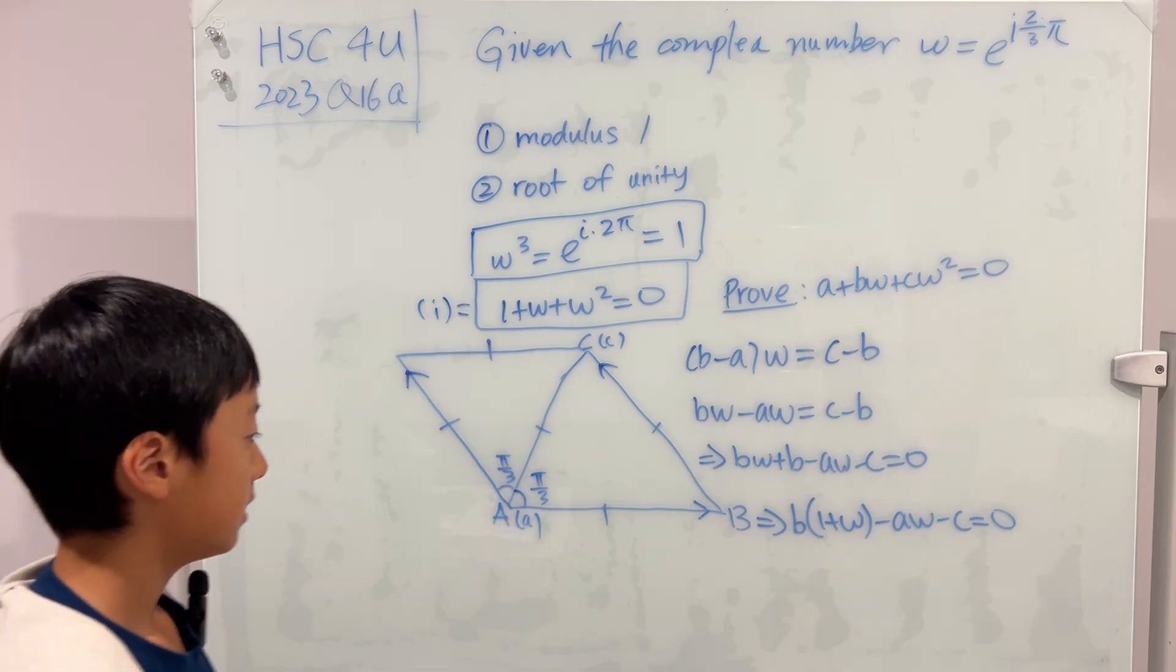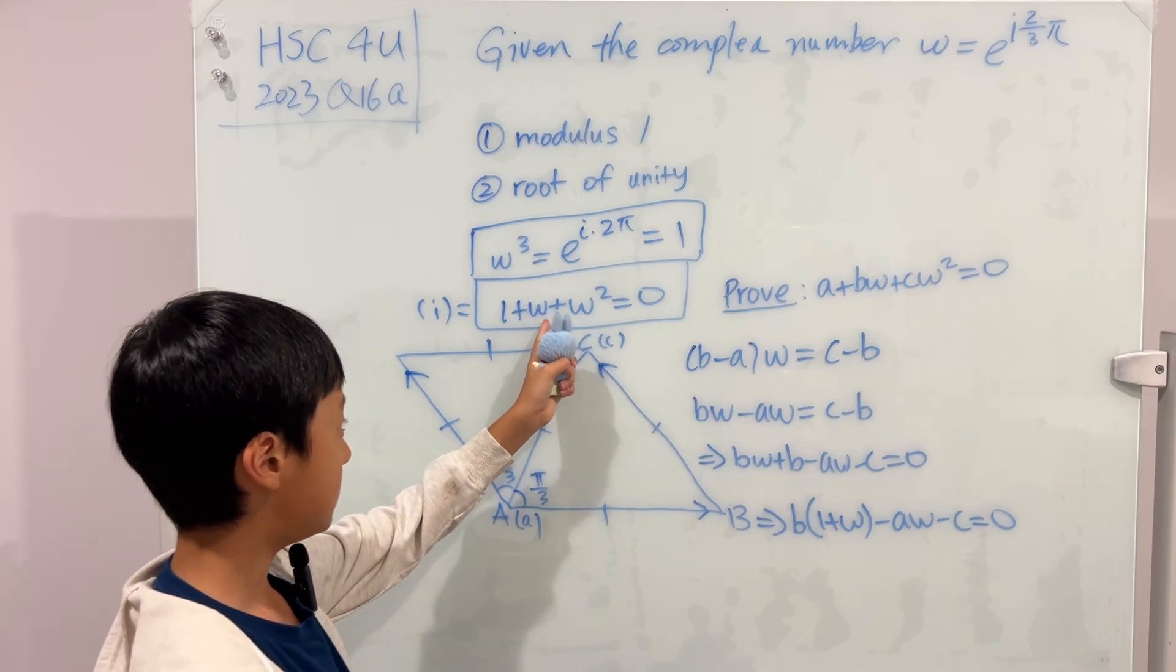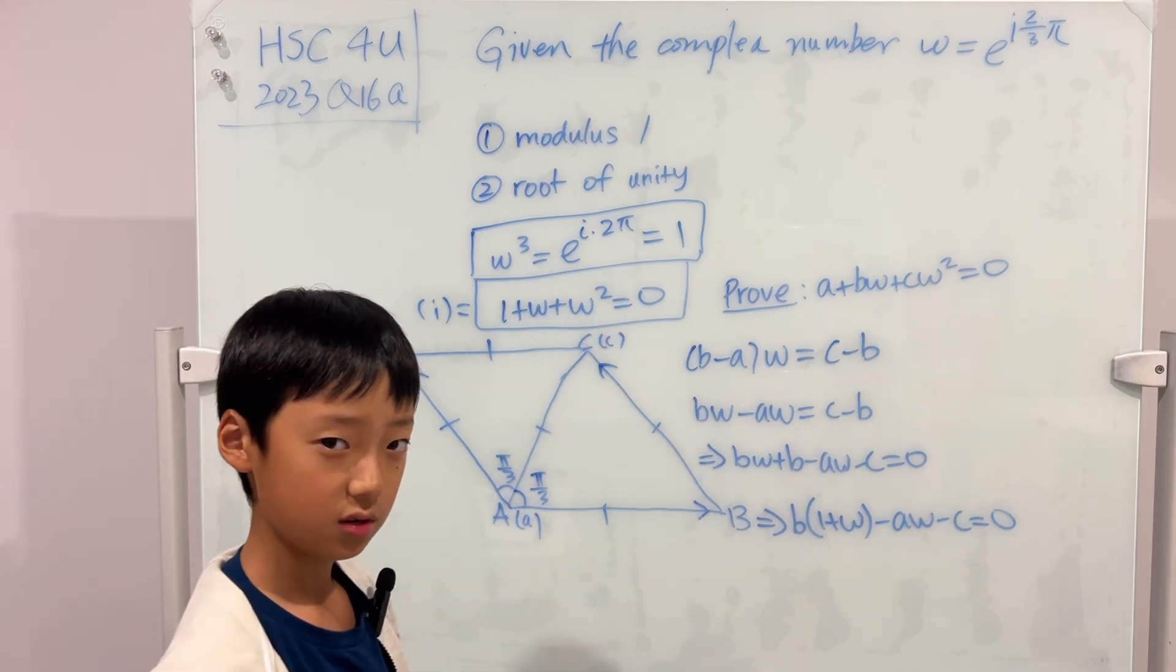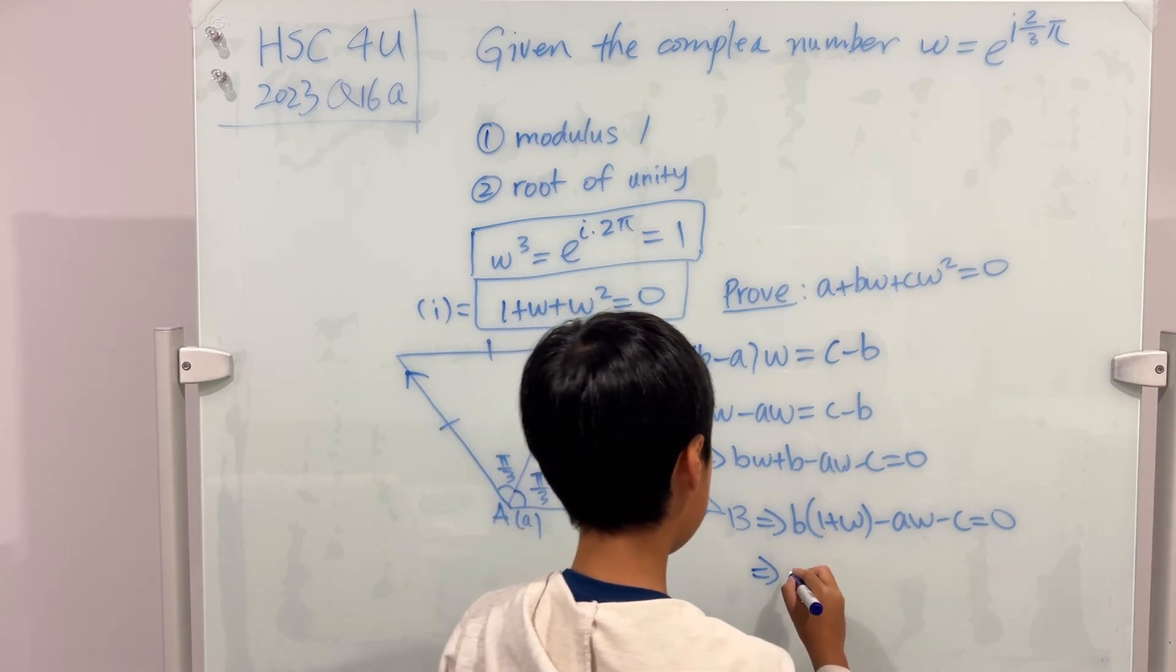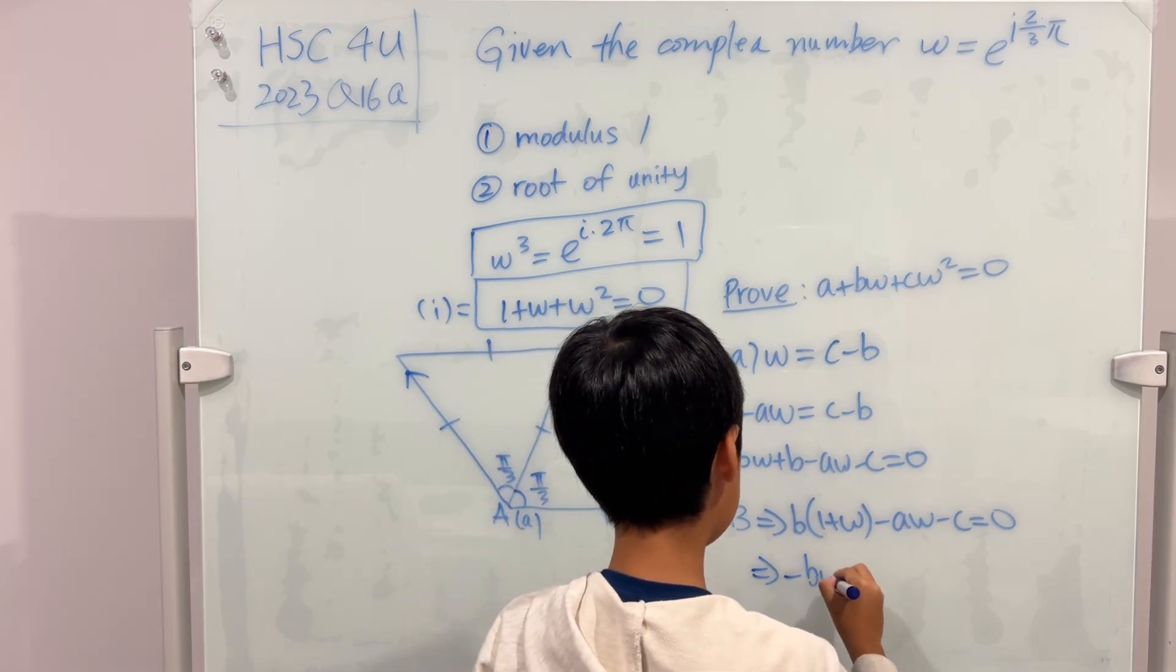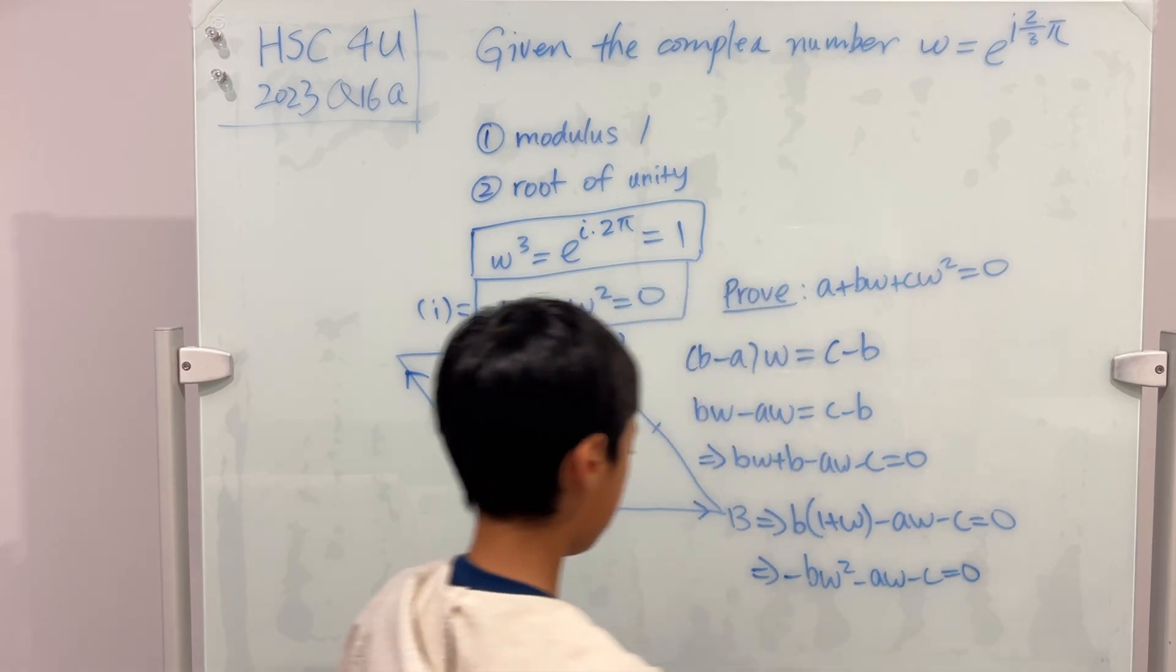So, we know one plus w plus w squared is equal to zero. So one plus w is equal to negative w squared. Right. So we know that this is negative w squared. So negative B w squared minus a w minus c is equal to zero.